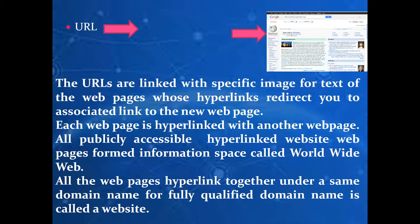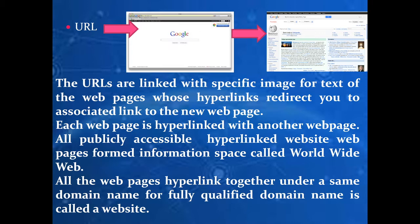URLs are linked with specific images or text of web pages whose hyperlinks redirect you to a new web page. For example, when we click on google.com and search a particular keyword, after clicking the search button it gives us a new web page — meaning that new web page is hyperlinked to the previous one.